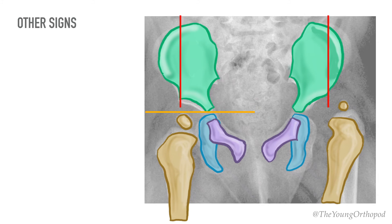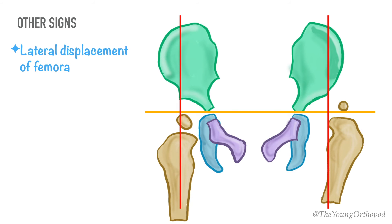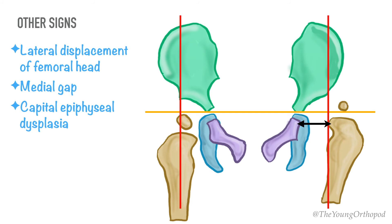Other signs of DDH include lateral displacement of the femoral head, and the medial gap between the medial border of the metaphysis of the femur and the acetabular tear drop is increased. Capital epiphyseal dysplasia is seen as delayed appearance of the center of ossification of the femoral head. Usually, the femoral head ossification begins to show between four and six months of age.